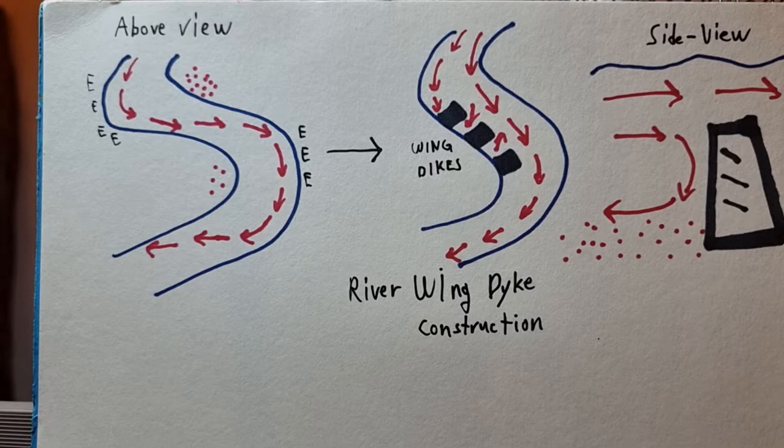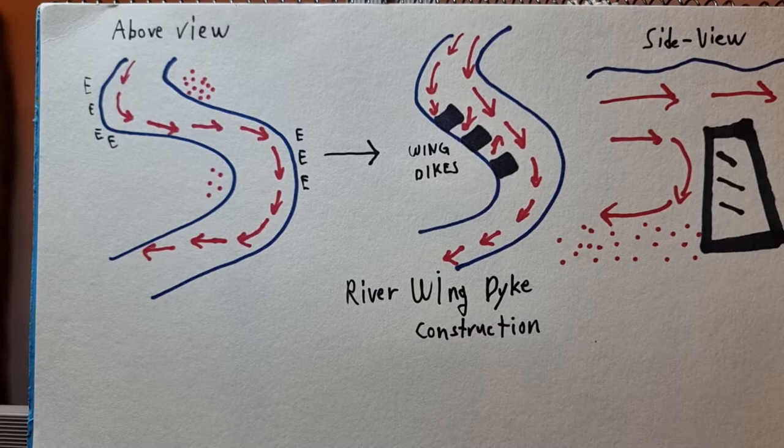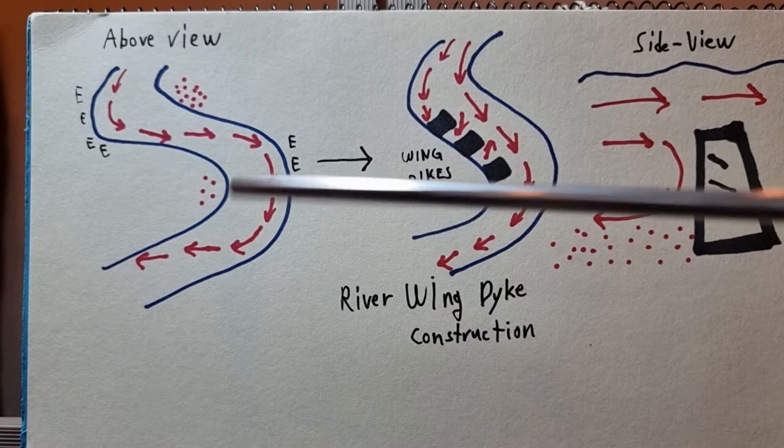There are many different types of river management strategies that hydrologists use today. Today I'm going to talk about one of them specifically, and it is called the river-winged dike construction.